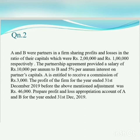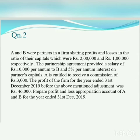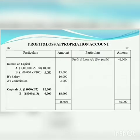Second question: A and B were partners in a firm sharing profits and losses in the ratio of their capitals, which were rupees 2 lakh and rupees 1 lakh respectively. The partnership agreement provided a salary of rupees 10,000 per annum to B, and 5% per annum interest on their capitals. A is entitled to receive a commission of rupees 3,000. The profit of the firm for the year ended 31st December 2019, before the above-mentioned adjustments, was rupees 46,000. Prepare the profit and loss appropriation account of A and B for the year ended 31st December 2019.